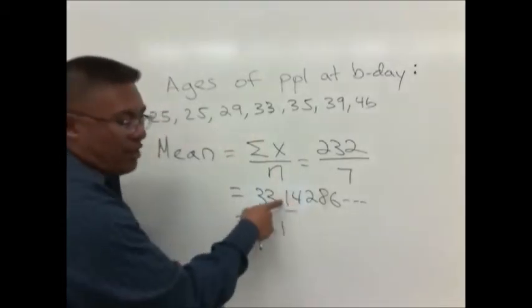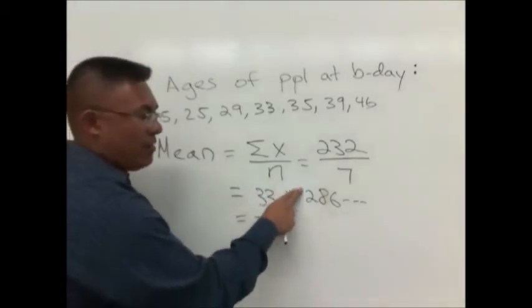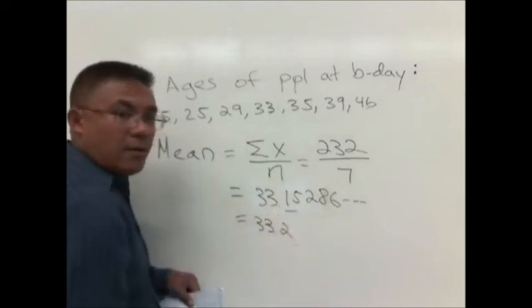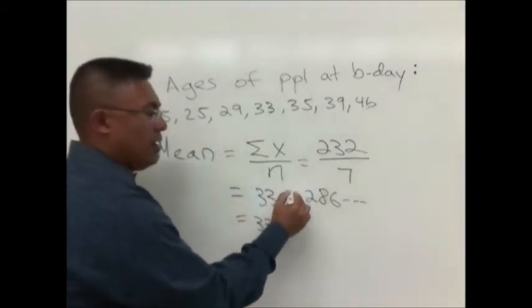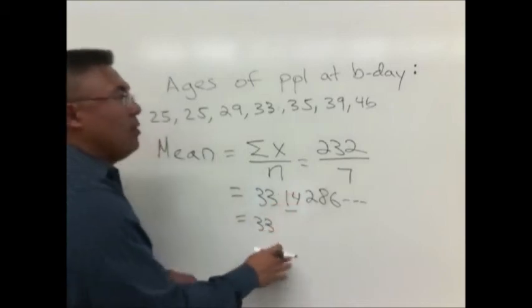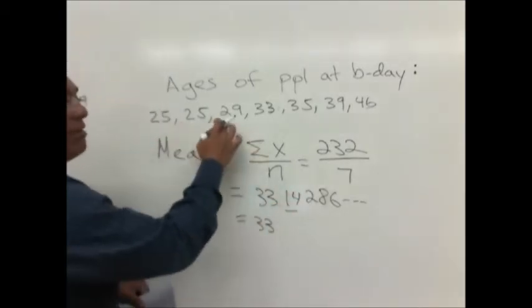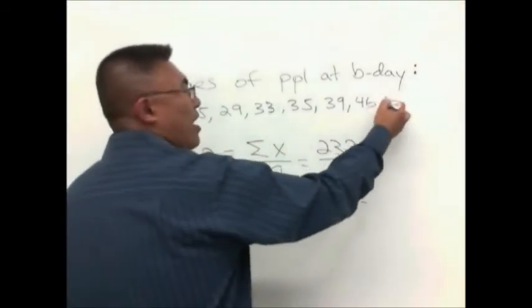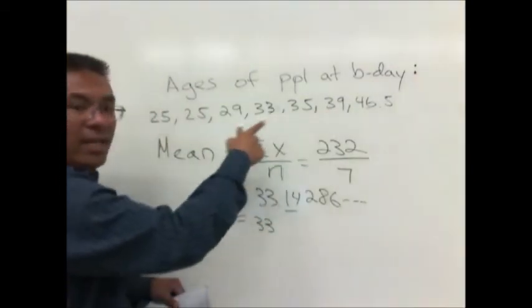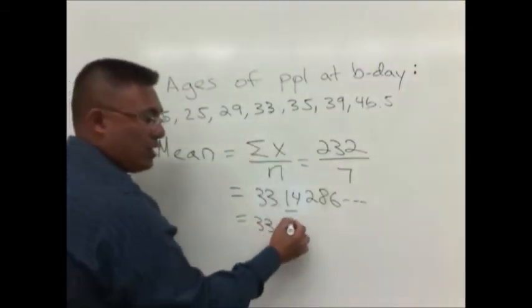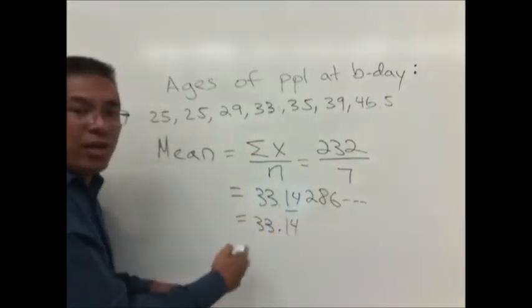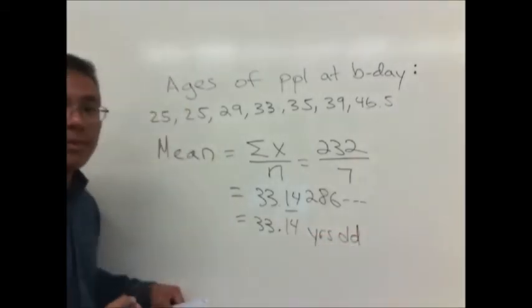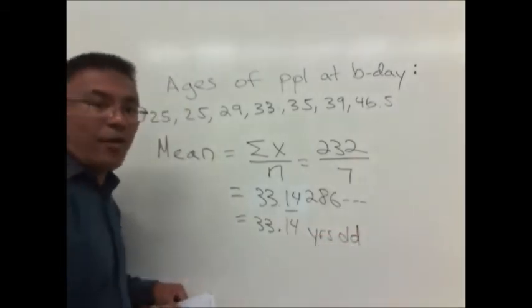Here they're all whole numbers, so one additional decimal place would put you right there. So the mean is 33.1. This is a 4, so that's not going to affect the 1 when you round it. If this was a 5, you'd round that to 2. Now let's say instead of whole numbers here we had 25.2, 25.7, 29, 46.5. Then you have one decimal place in your data, so that means you could round it to two decimal places in your final answer for the mean. Don't forget your units too. This is years old.